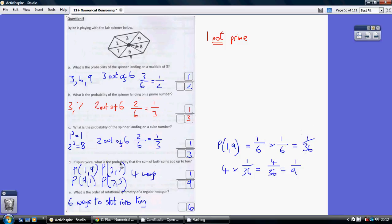There are 4 combinations that we're interested in. So we want 4 lots of 1 over 36, which is 4 over 36. Divide top and bottom by 4, that's a 9th.